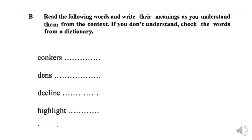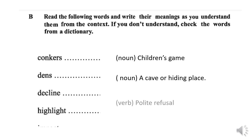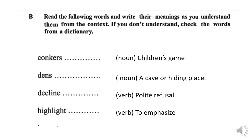We have completed the text. Now, read the following words and write their meanings as you understand them from the context. Our first word is conkers — it's a noun and it's a kind of children's game. The second one is den — also a noun, it means a cave or a hiding place. Then, decline — it's a verb and it means polite refusal. The fourth one is highlight — it's a verb and it means to emphasize.